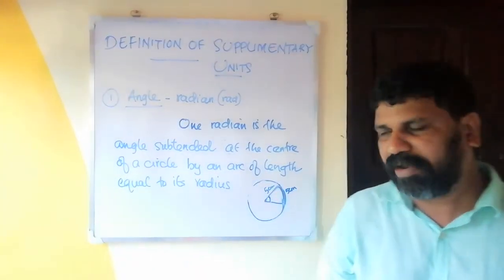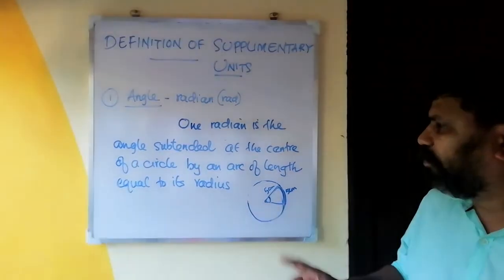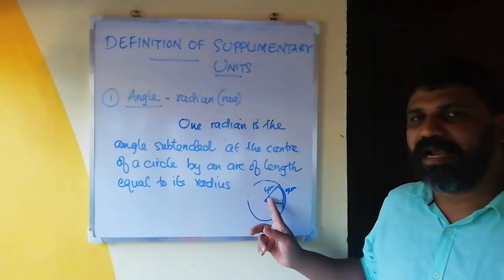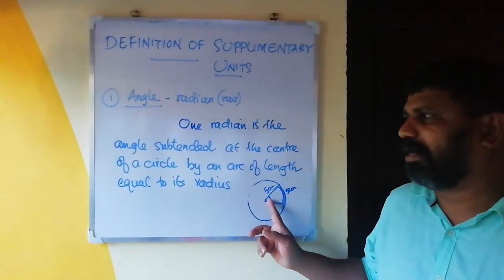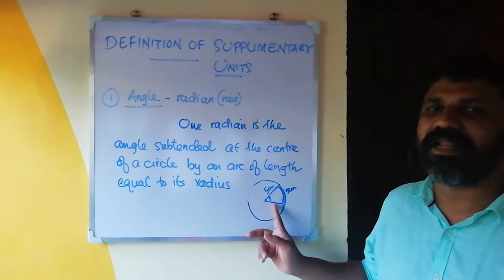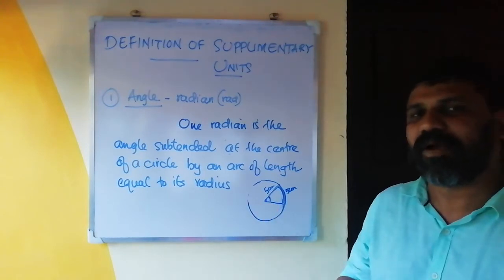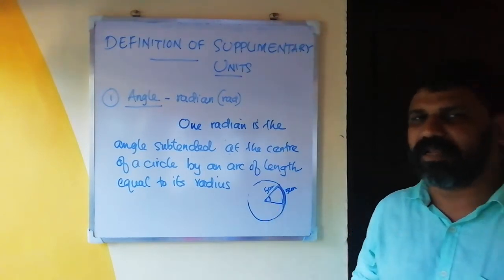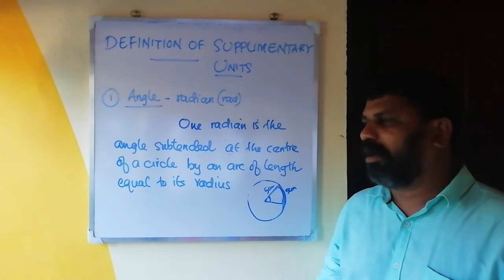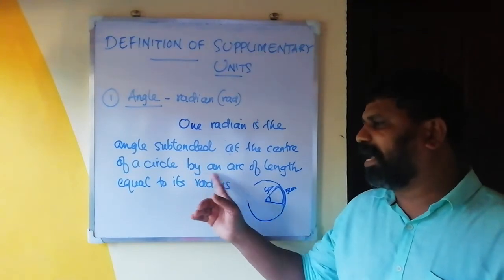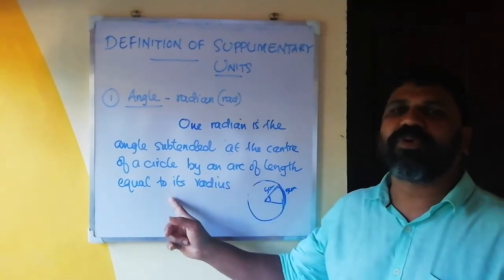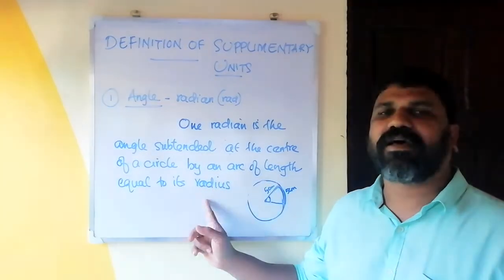One radian is the angle subtended at the center of a circle by an arc of length equal to its radius.